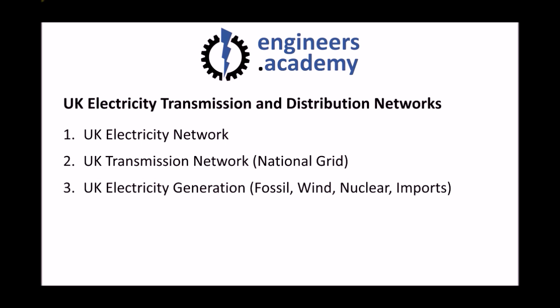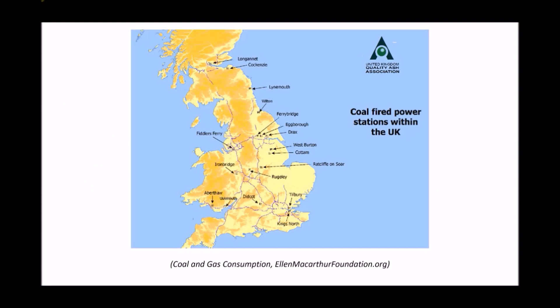We have a number of different sources of electricity. Looking at large-scale generation, we have traditional power plants and fossil-fuel-burning plants. On this image we can see the locations of our coal-fired power stations — some of which will also be combusting natural gas — and we see a relatively even spread all around the UK.